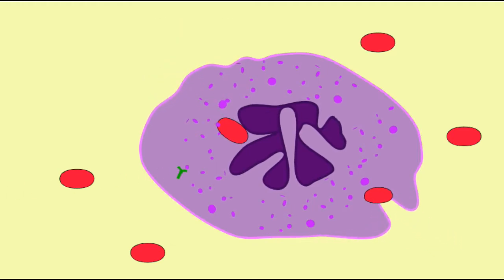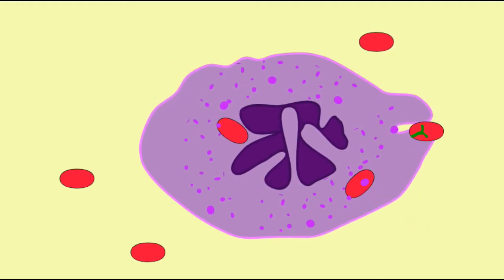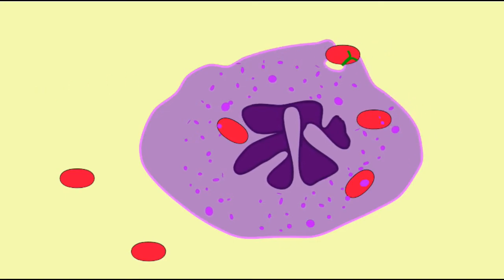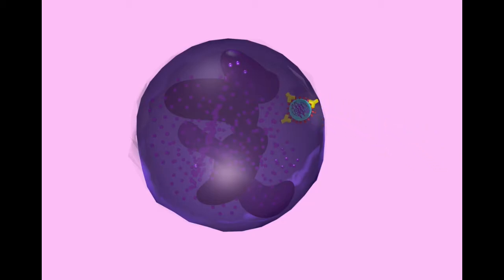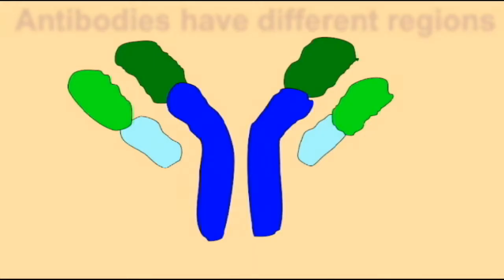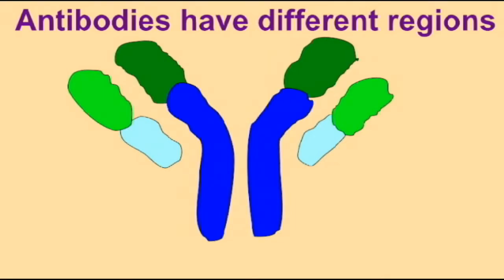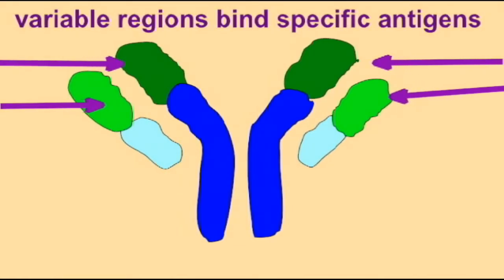Once antibodies bind antigens like coronavirus proteins, this encourages cells of the innate immune system to perform phagocytosis. These antibodies therefore act in a process known as opsonization — by attaching to a foreign antigen, they encourage its internalization through phagocytosis.